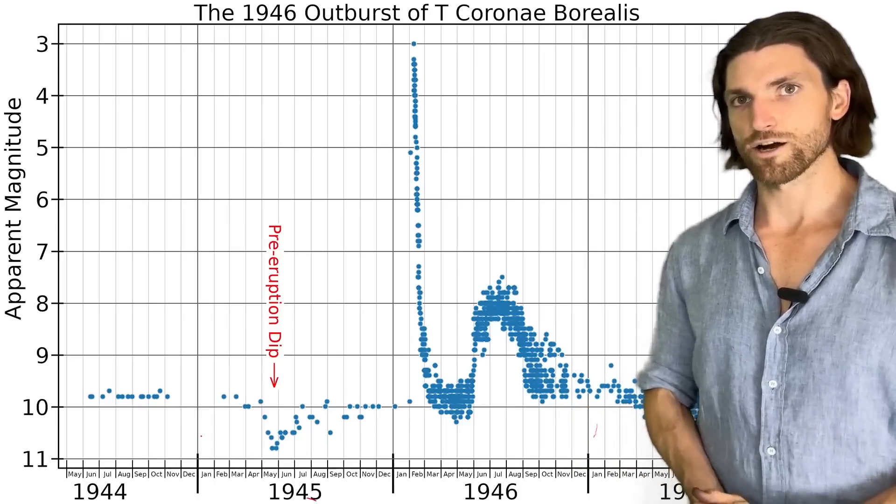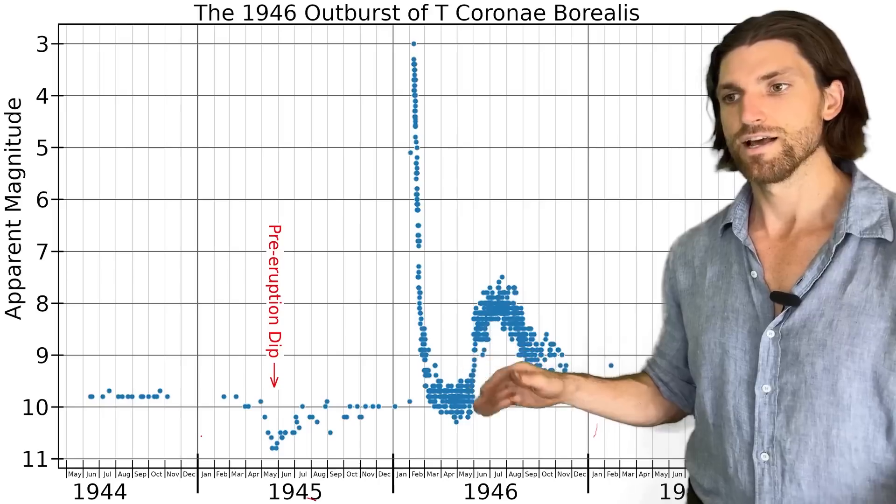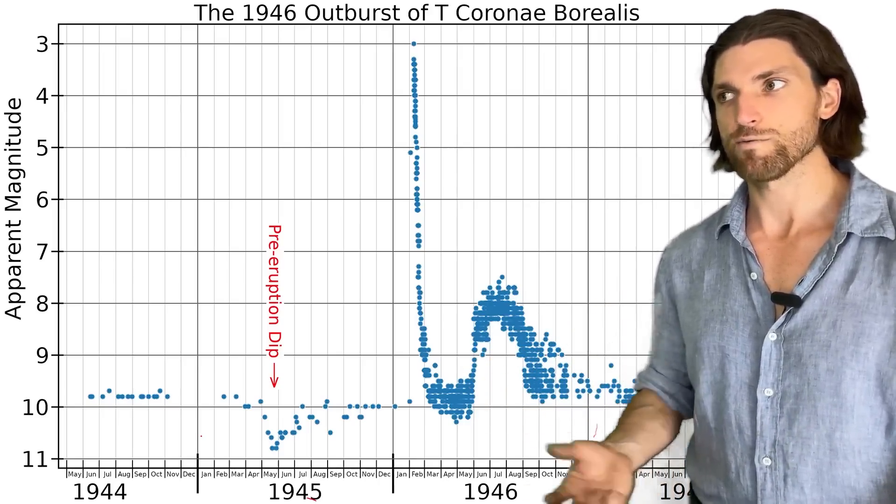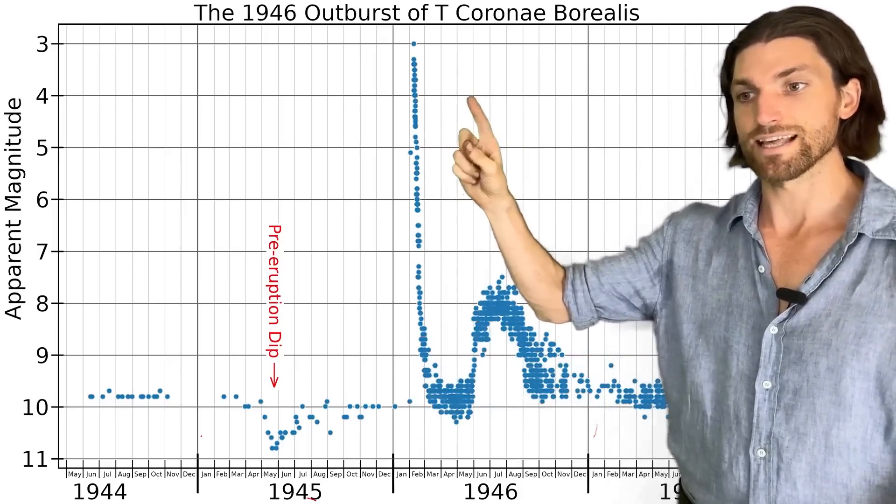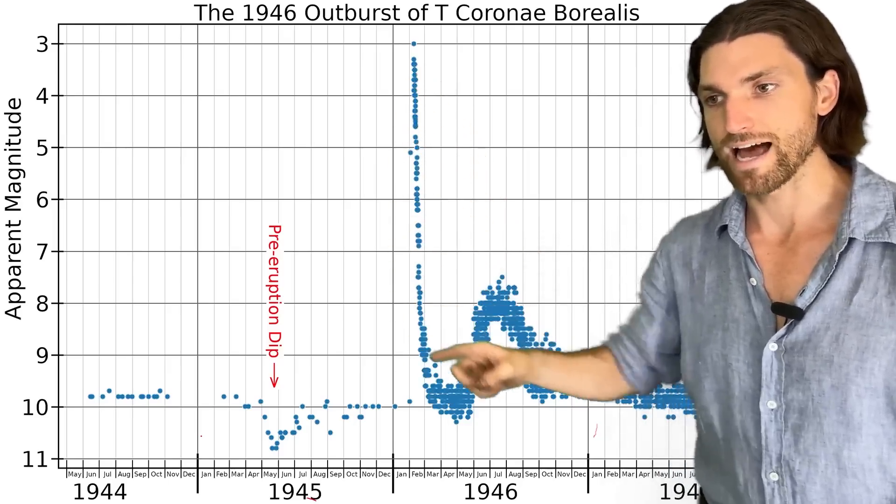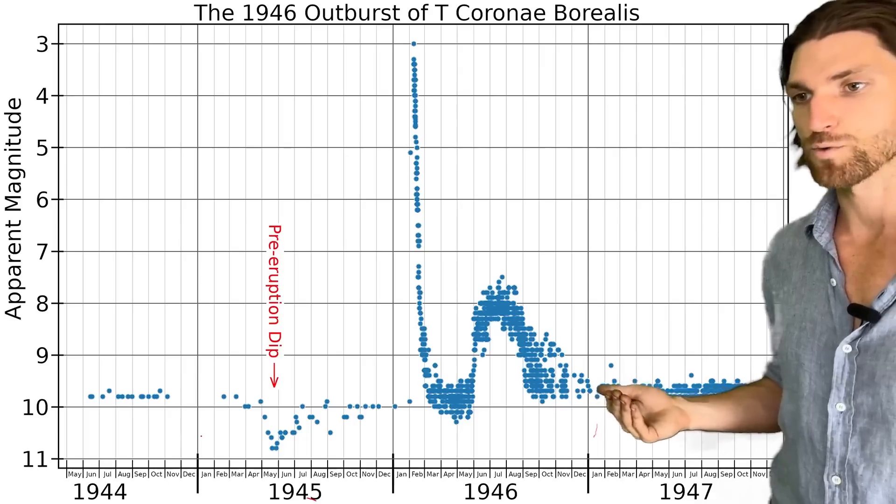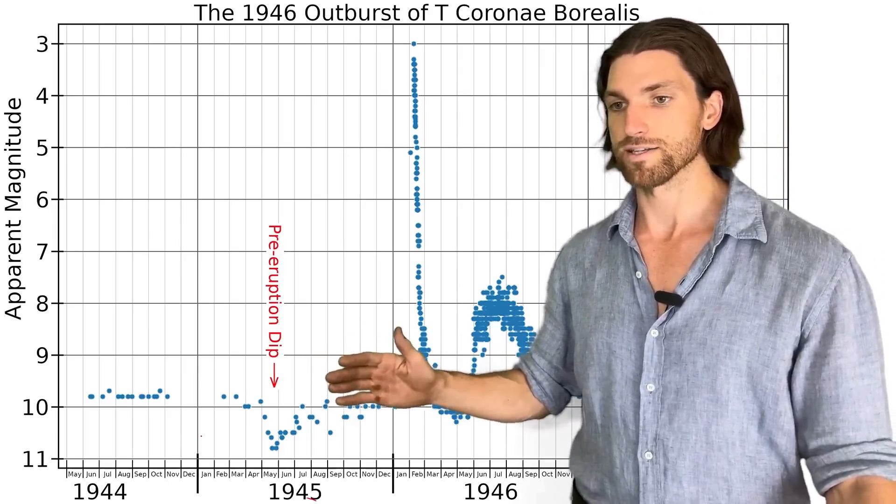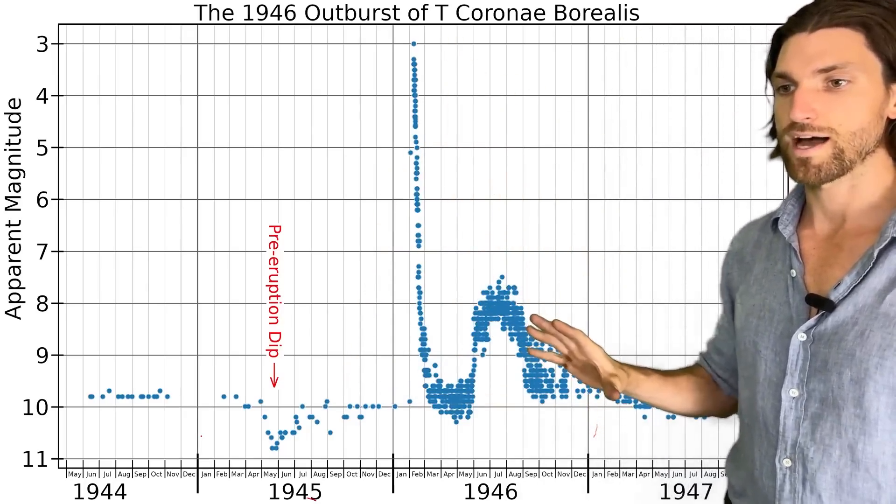Here we have the light curve for TCRB. And we see this huge spike in brightness in 1946 when it released that nova explosion. And even from 3000 light years away, we were able to see that light and the apparent brightness shot up dramatically. You can see that this is a fairly transient fast event. It goes up and back down within a month. Then there was this kind of wave sine wave that occurred afterwards. But we see how the magnitude back in 1946 was about positive 10 and went all the way up to about plus three. And so this is what happened in 1946.